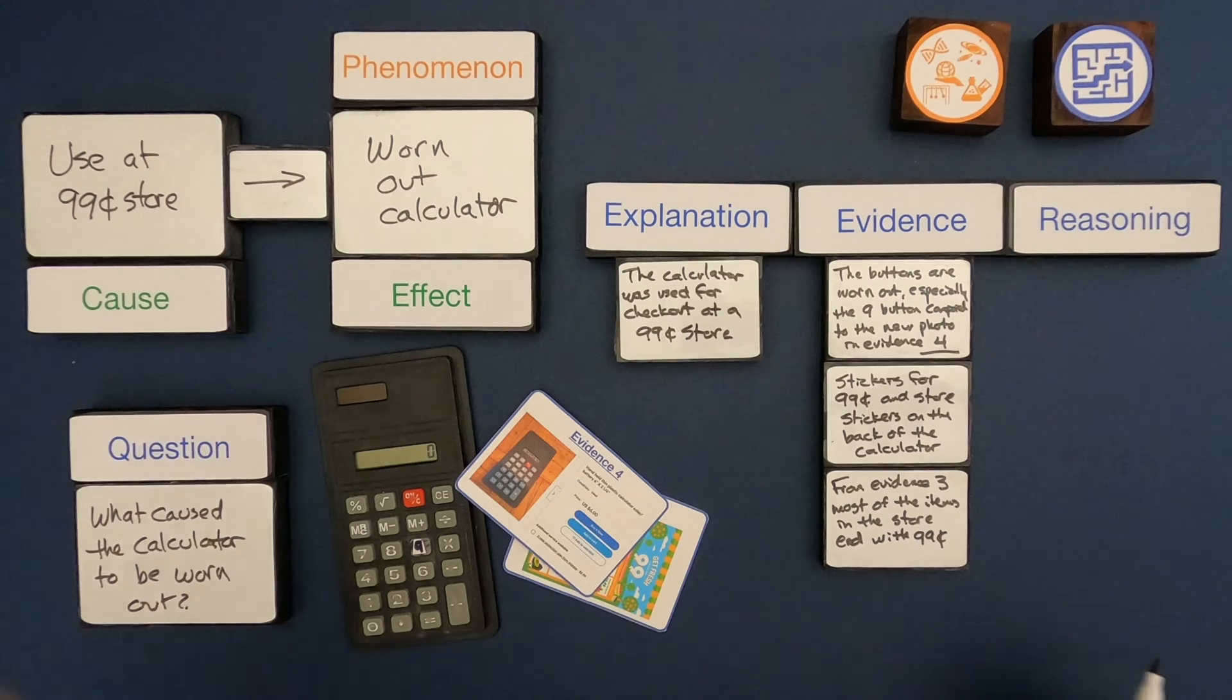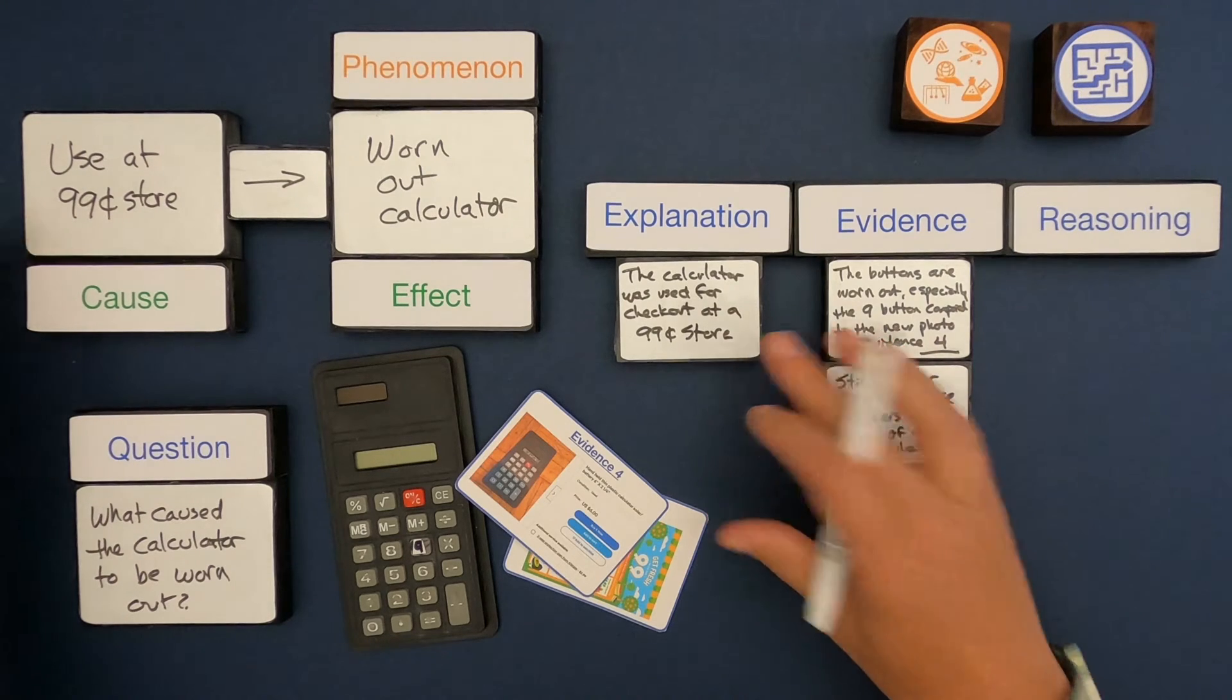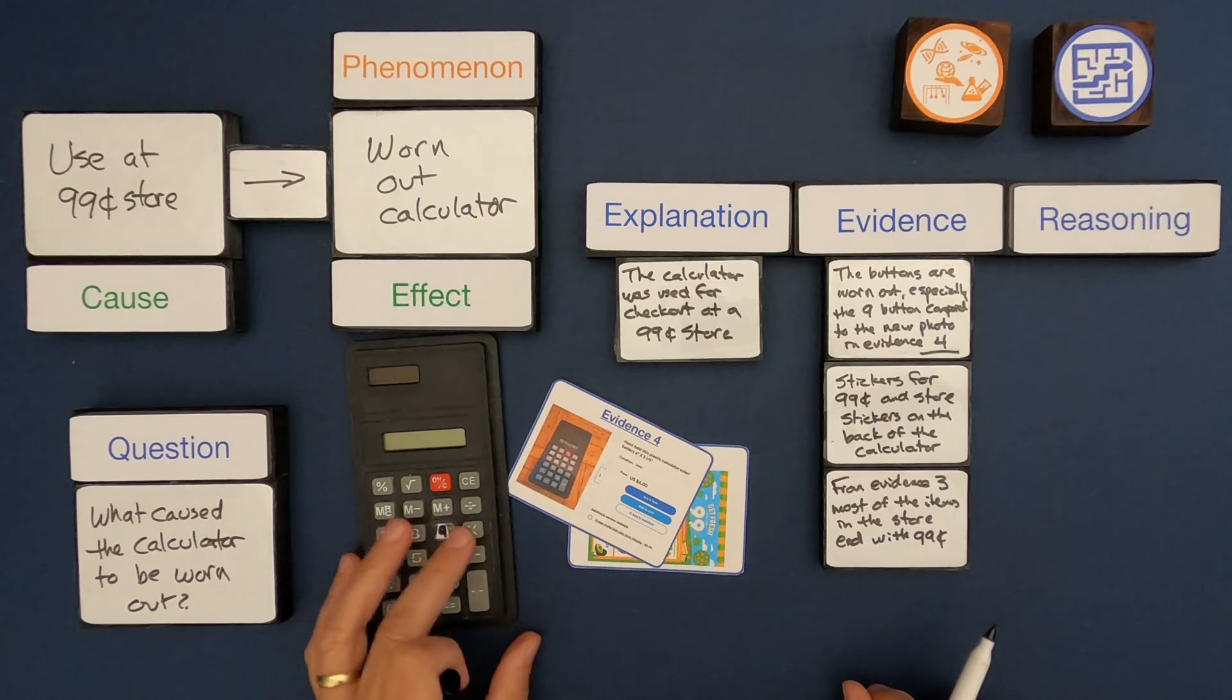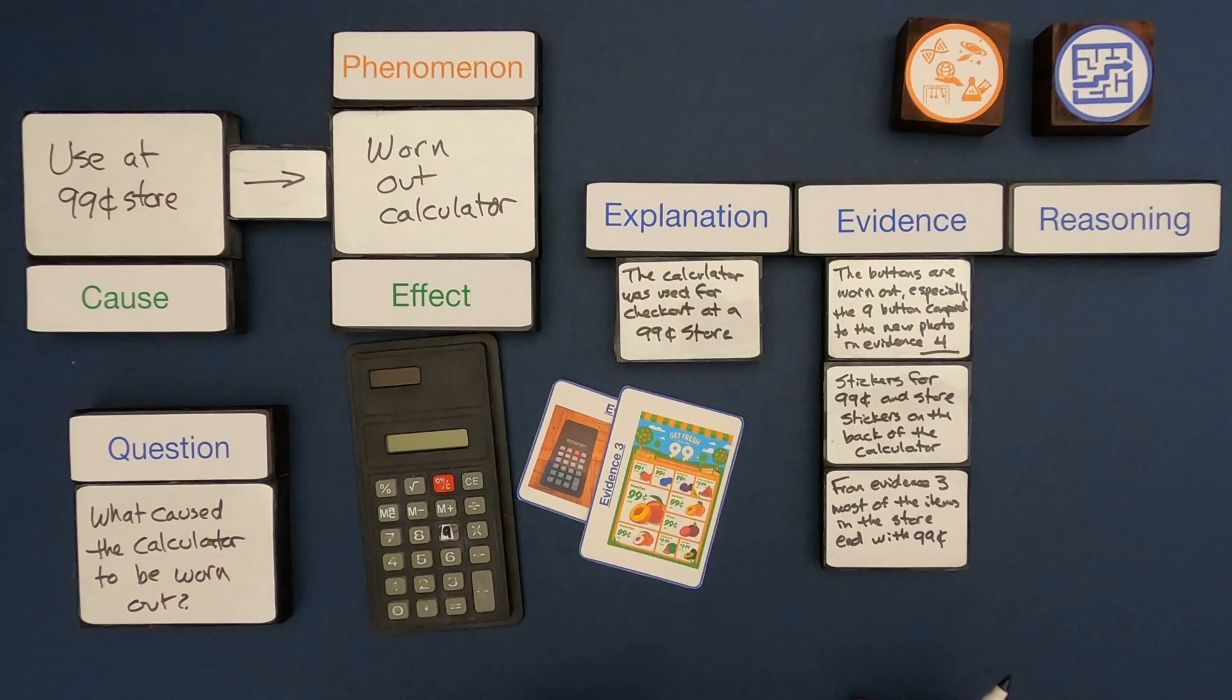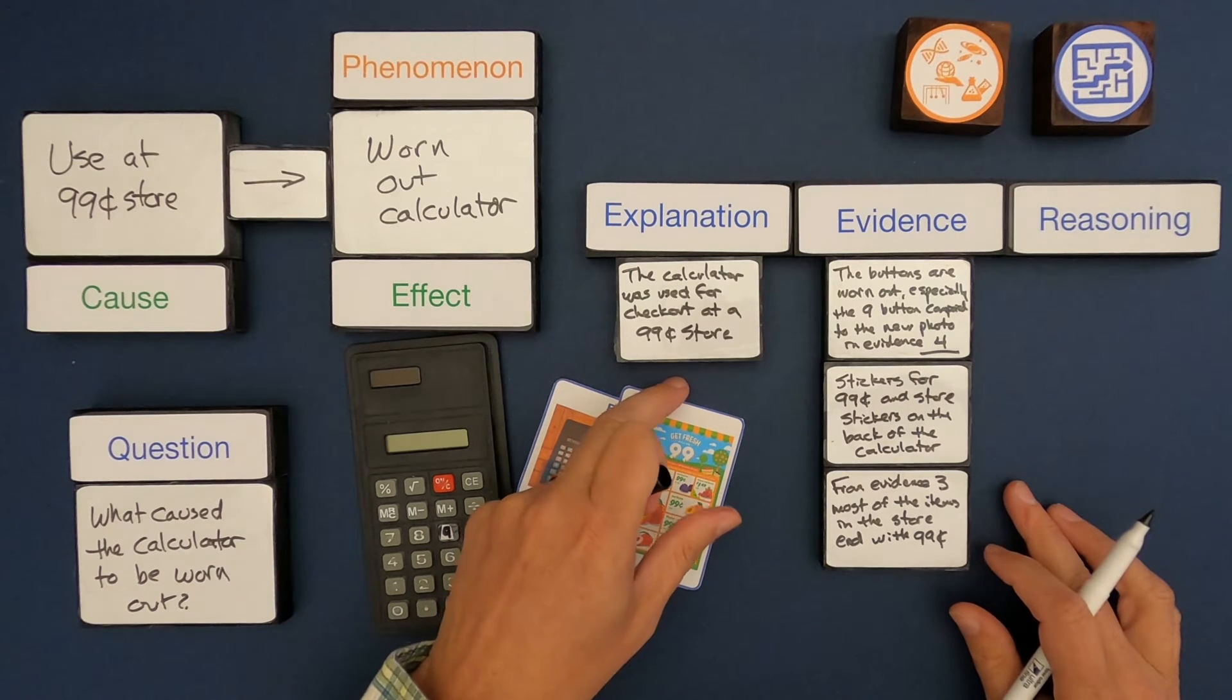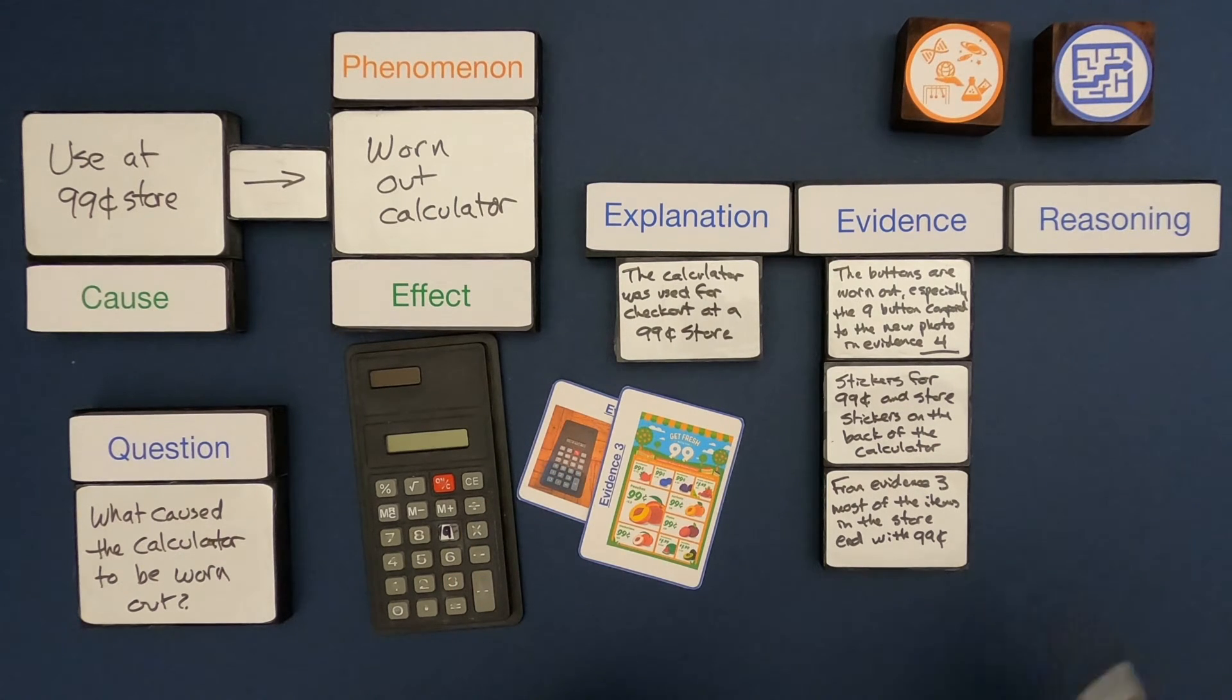My explanation and my cause are the same thing. I believe that the calculator was used for checkout. Somebody was working at a 99 cent store. Here's a flyer. And as they used it, it just got worn out. So now I've got some good evidence, I've got an explanation. Now I have to come up with the reasoning.